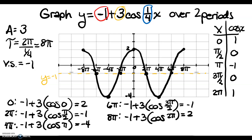And there is the graph of negative 1 plus 3 cosine of (1/4)x over 2 periods.